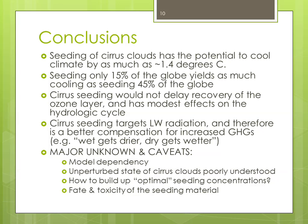In conclusion: seeding of cirrus clouds has the potential to cool climate by about 1.4 degrees C. We can get the same cooling by seeding only 15% of the globe at high latitudes as we get when seeding 45% of the globe. Cirrus seeding would likely not delay recovery of the ozone layer like stratospheric aerosols would — there's no additional surface for chemical reactions in the stratosphere, and the stratosphere also warms. Because cirrus seeding targets long-wave radiation rather than short-wave radiation, it is in many ways a better compensation for increased greenhouse gases — for example, the feature of wet gets drier and dry gets wetter.